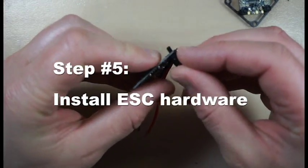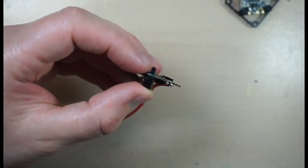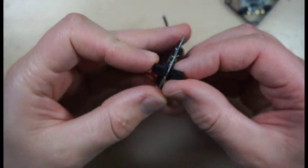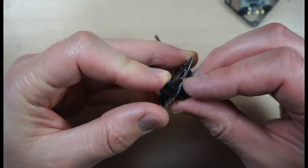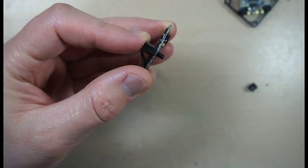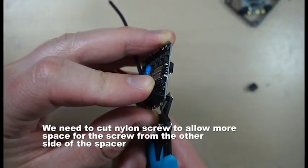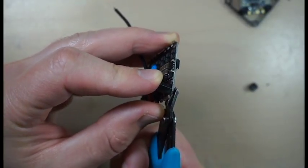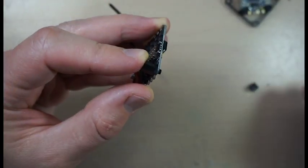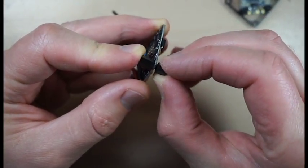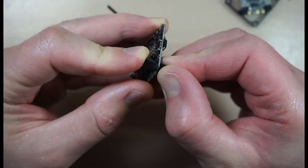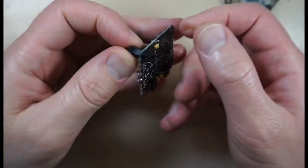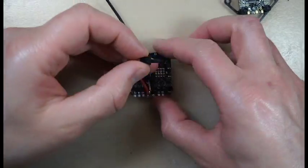We will have to slightly trim integrated screw to allow screw from the other side of the spacer because otherwise there will be not enough space. You typically need around 3 mm of thread left. Once you are happy with how first spacer fits just repeat it for other 3 spacers.